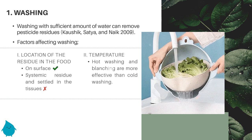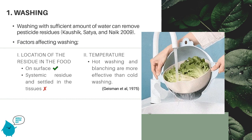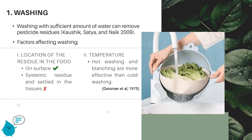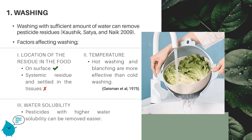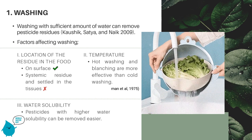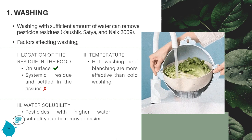Next, temperature — hot washing and blanching are more effective than cold washing. Lastly, water solubility — pesticides with higher water solubility can be removed more easily.